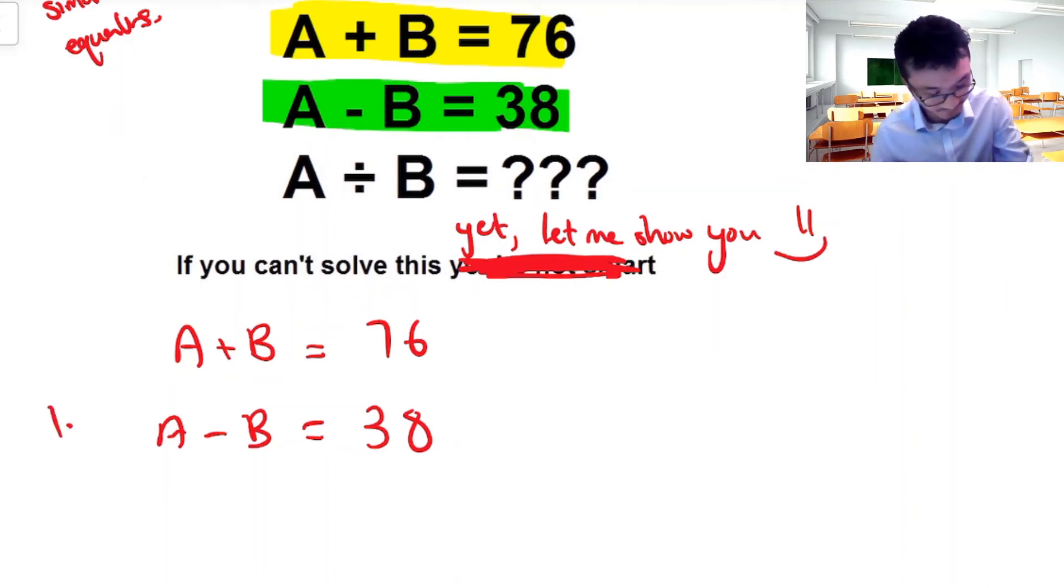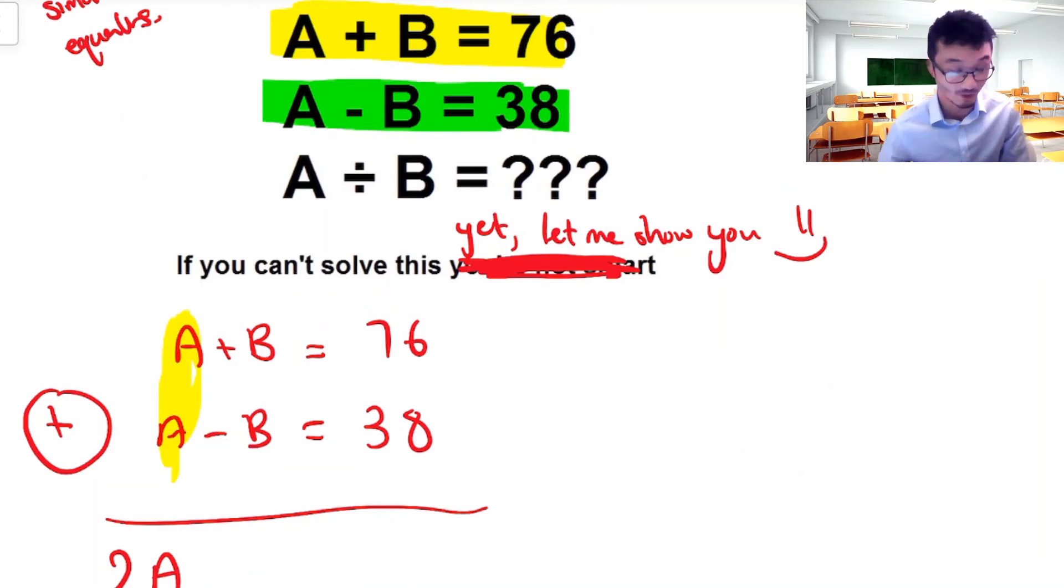So I'm going to add both equations, and you're going to look at all the things that can be added together. So the A's are added together, the B's are added together, and the numbers are added together. So let's do the A's added together first. A plus A, that's just going to be 2A. Now this is why I chose the operation of adding, because if I subtract B plus negative B, well if you take one thing and you add the negative of that, they're just going to cancel out. They're going to go away, and they're going to eliminate, and this is actually called the elimination method.